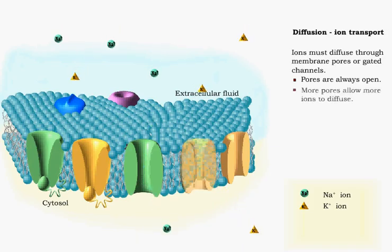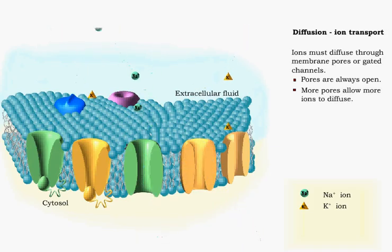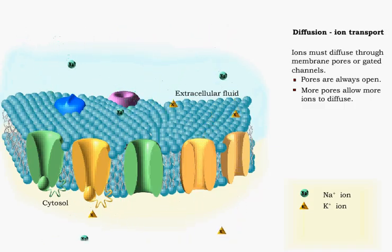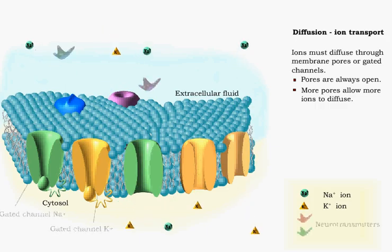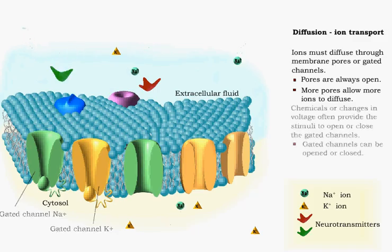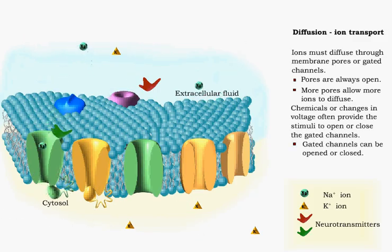The number of pores or channels determines the amount of ions that diffuse across the membrane. Gated channels are opened when they bond to chemicals or experience changes in voltage.